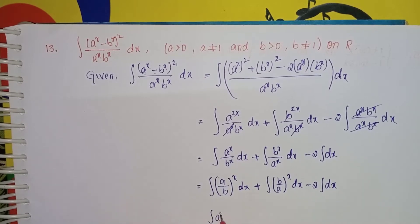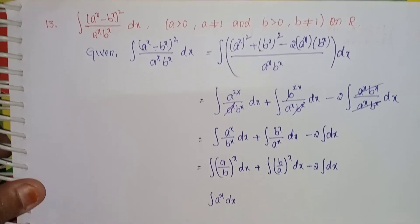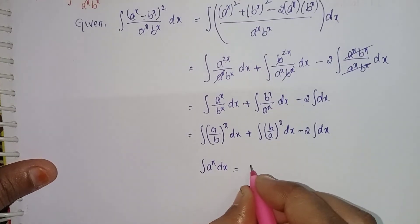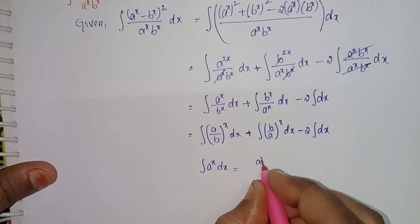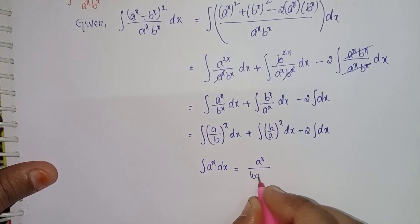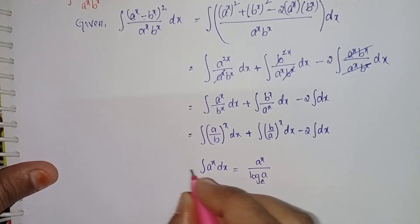The formula to use here is: integral of a^x dx equals a^x divided by log base e of a, plus c.